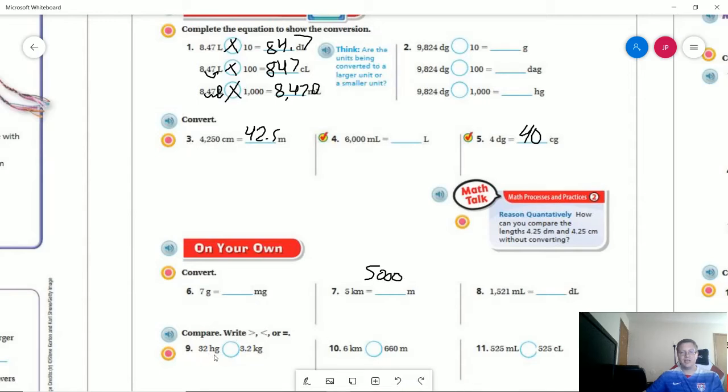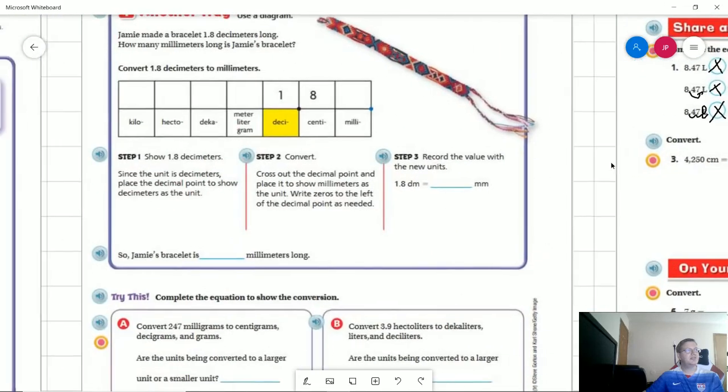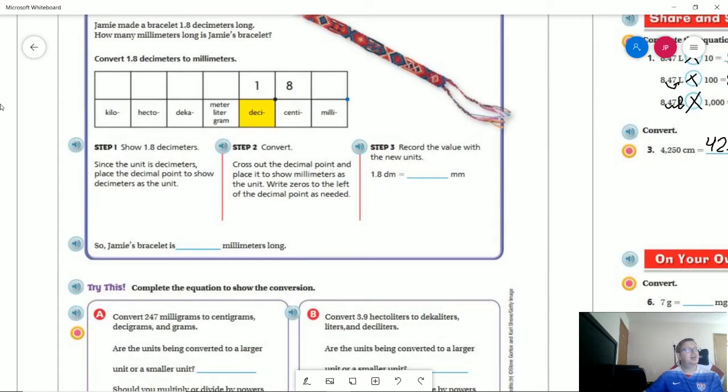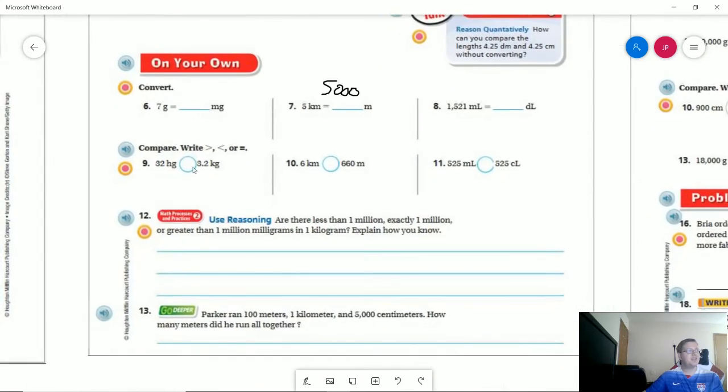Number nine we are going to compare so we are going to say whether our hectograms 32 of them are greater than equal to or less than 3.2 kilograms. So if we have HG we are way over here kilograms would be over here so if we wanted to change from hectograms to kilograms we would be dividing by 10 or moving our decimal point one spot to the left that would show both of them being equal. I know that has been off screen because of my face so if I'm going from here to here I'm moving over one spot to the left with my decimal point and those would be equal.